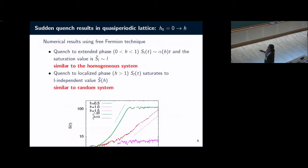In this Aubrey-Andre model, we know that when h is less than j, you have eigenstates which are completely delocalized. We expect that if you quench it to a delocalized phase, then your system behaves similar to a homogeneous system. We do expect that when you quench your Aubrey-Andre model to a field value of 0.5, then the entanglement entropy increases linearly, just like in the homogeneous case.